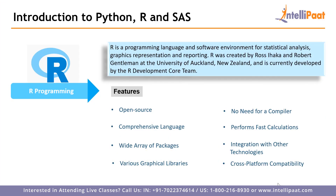Moving on to R programming. R is a programming language and software environment used for statistical analysis, graphics representation, and reporting. It is freely available and open source. The core of R is an interpreted computer language that allows branching, looping, and modular programming using functions. R also allows integration with procedures written in C, C++, .NET, Python, or Fortran. Its features include being open source, comprehensive — with a wide array of packages used in statistical analysis — and having various graphical libraries for data visualization.